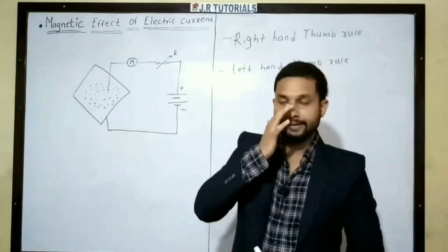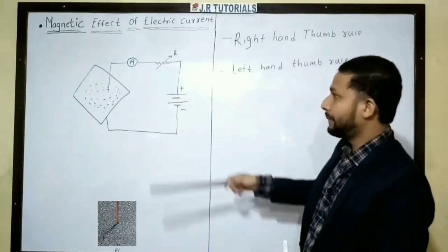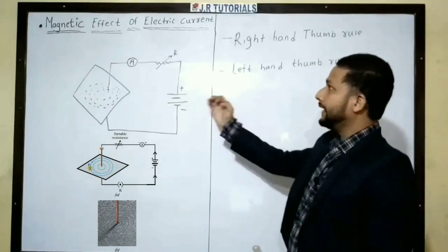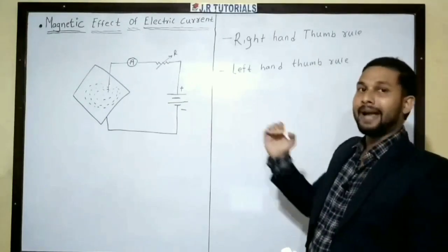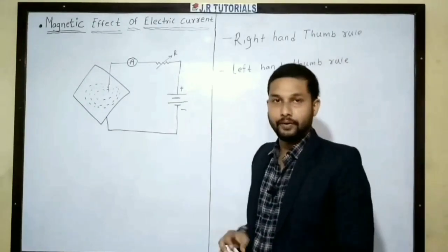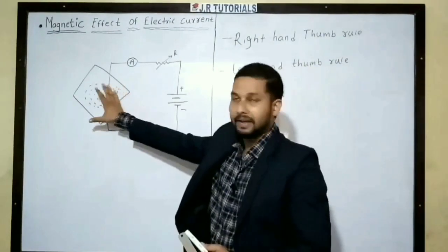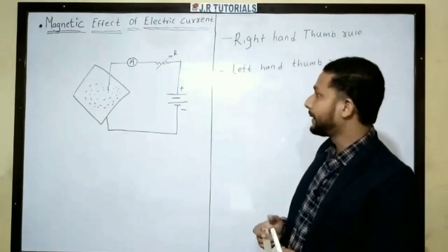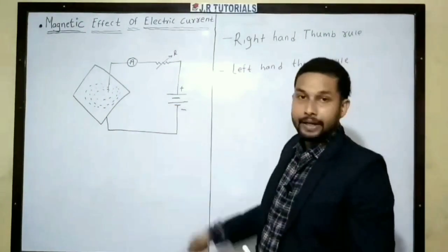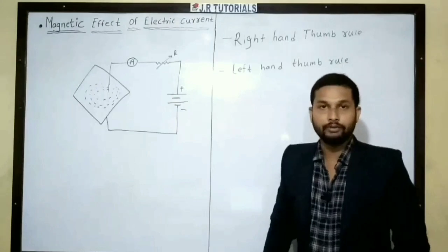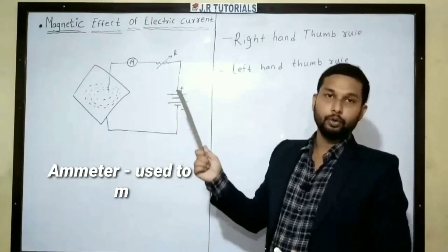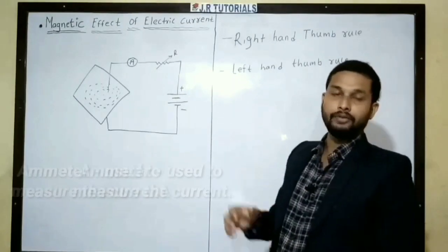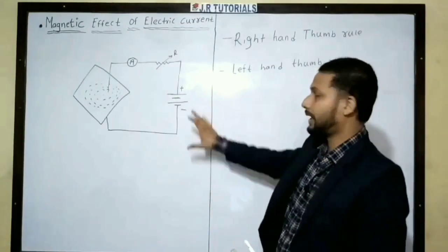So how does this happen? We will discuss this. Here we have a basic dynamic representation. When electric current is supplied, the magnetic effect is generated. Here we consider that we have a piece of paper with iron filings. This is an ammeter, and the function of the ammeter is to measure the amount of current.